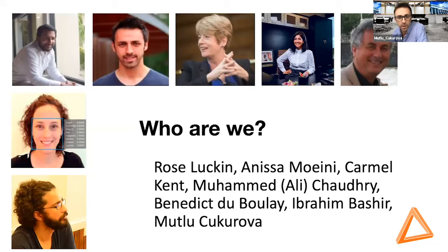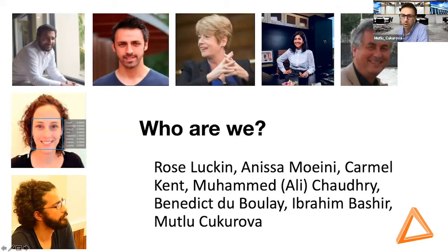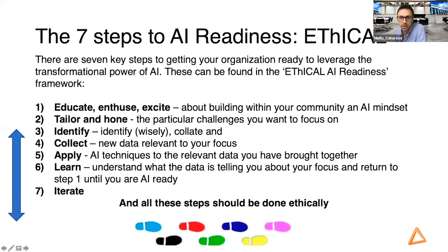So who are we? We are Rozakin, Karmakant, Vendik Nibbule, Mohamed Ali Shadri, Anishina Mohini, Ibrahim Bashir, and myself, Mohamed Farroa. All of us have relevant and complementary backgrounds in learning sciences, AI education, and data science. In our work, we follow the seven steps of the AI framework — an iterative step-by-step guide to prepare educators and educational organizations to leverage the power of data and AI to address some of the challenges they are currently facing.